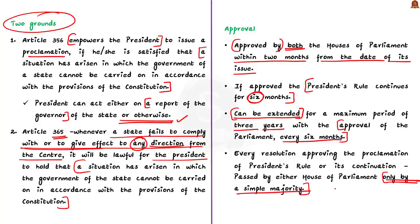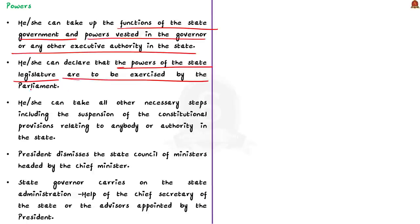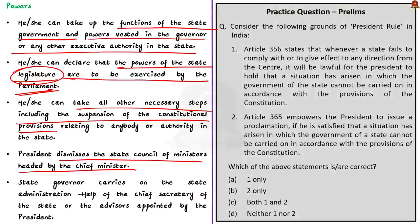The president acquires extraordinary powers when President's Rule is imposed in a state. He or she can take up the functions of the state government and powers vested in the governor or any other executive authority. He or she can declare that the powers of the state legislature are to be exercised by Parliament, and can also take all necessary steps including the suspension of constitutional provisions relating to any body or authority in the state. When President's Rule is imposed, the president dismisses the state council of ministers headed by the chief minister, and the state governor carries on the state administration with the help of the chief secretary or advisers appointed by the president.